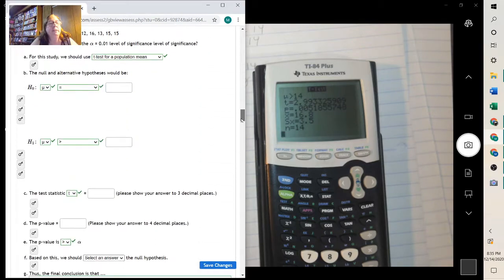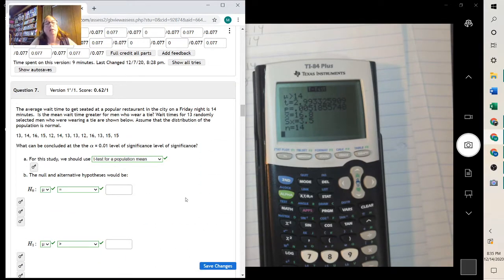Number seven is similar, except instead of telling you the mean wait time. The average wait time to get seated at a popular restaurant in the city on Friday night is 14 minutes. Is the mean wait time greater for men who wear a tie? Wait times for 13 randomly men who are wearing a tie are shown below.